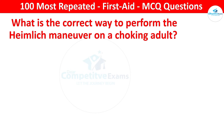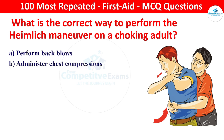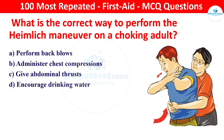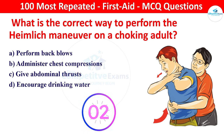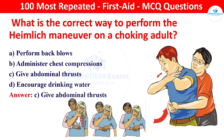Next question: what is the correct way to perform the Heimlich maneuver on a choking adult? Your options: perform back blows, administer chest compressions, give abdominal thrusts, or encourage drinking water. The right answer is give abdominal thrusts. Abdominal thrusts help dislodge a foreign object from the airway.